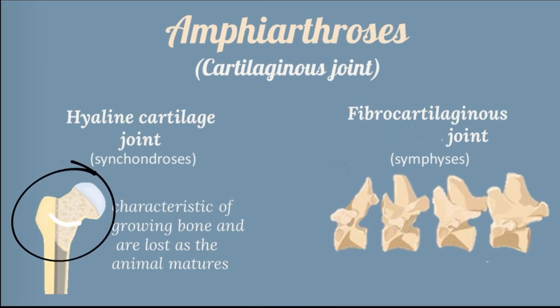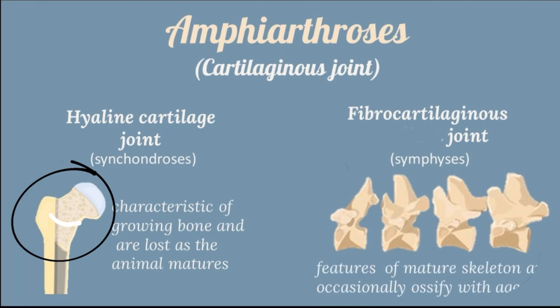The fibrocartilaginous joint, or symphysis, is a feature of the mature skeleton and occasionally ossifies with age. It is united by a flattened disc of fibrous cartilage, as found between the adjacent pelvic bones and between the bodies of adjacent vertebrae and the sternum.